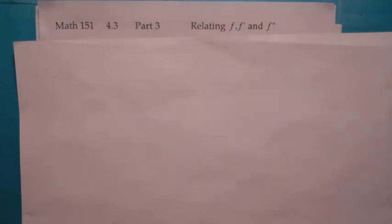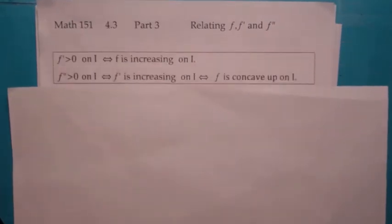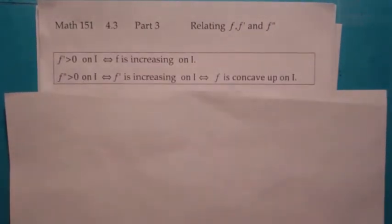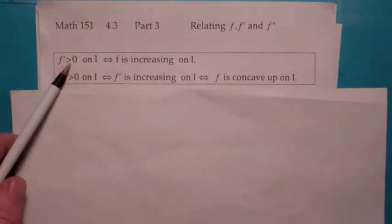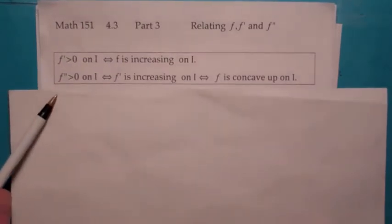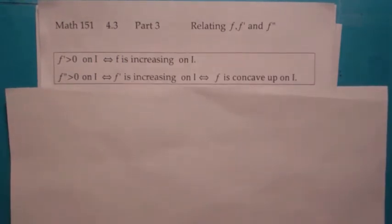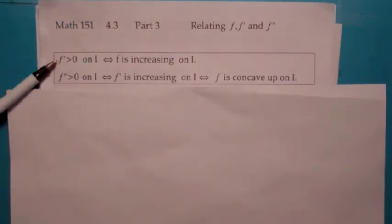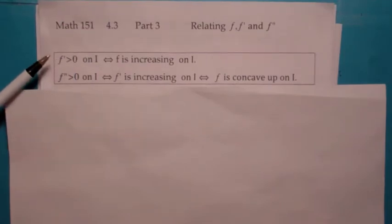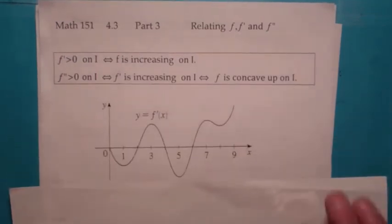Welcome to section 4.3, part 3. This third and final part is a continuation talking about the relationship between f, f prime, and f double prime. What's in this box here is really a summary of everything we've talked about in this section. The first sentence leads to the first derivative test, which allows us to find the local max and min. The second line relates f double prime with f prime with f, leading to the concavity test, which finds inflection points and where f is concave up and down.